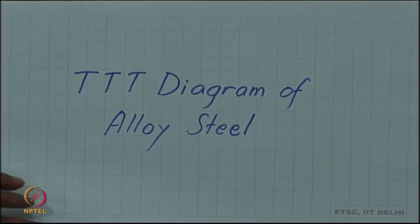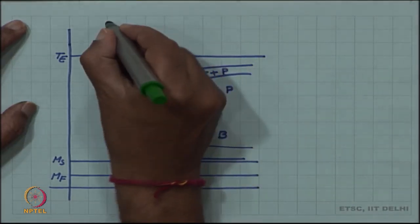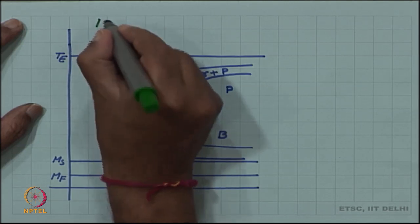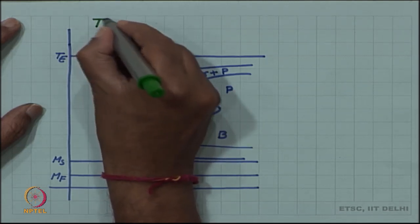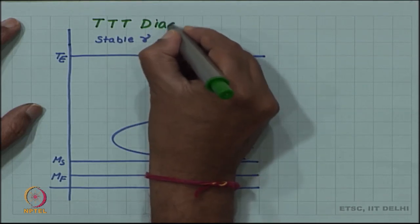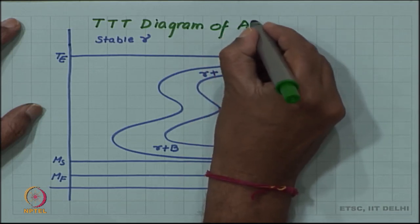So, let us look at how alloying modifies the TTT diagram. Here is an example, not of any particular steel, but a schematic one of what the alloying does to the TTT diagram of alloy steel.